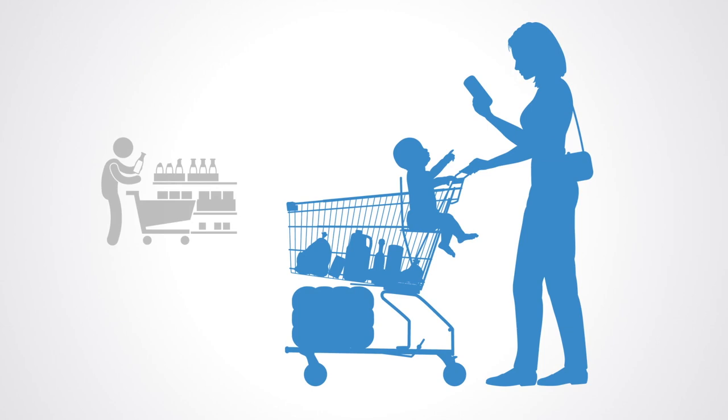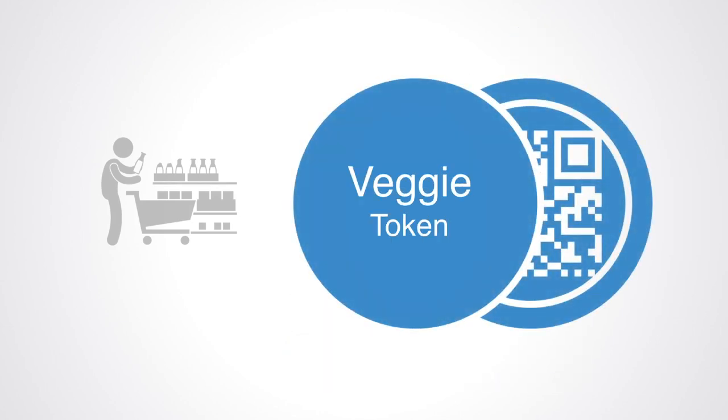In a token economy, we can put our money where our mouth is, as proof of what we value. We could create a veggie token, that could be programmed so that it could not be used to purchase meat products.